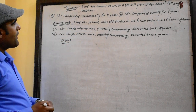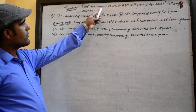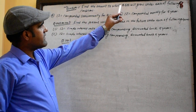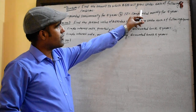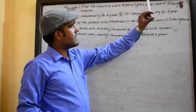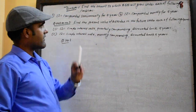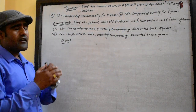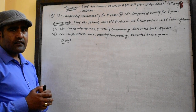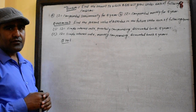Find the amount to which rupees will grow under each of the following conditions. Find the amount — present value to future value.